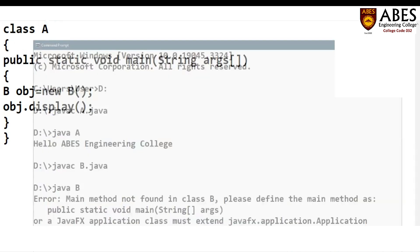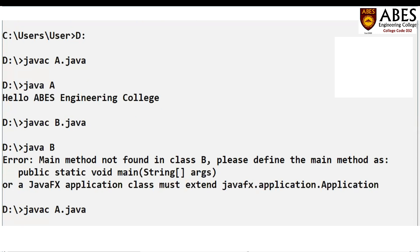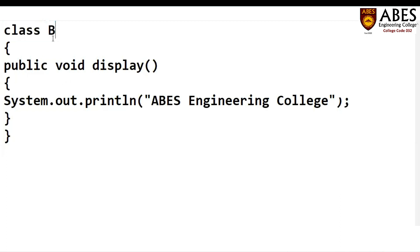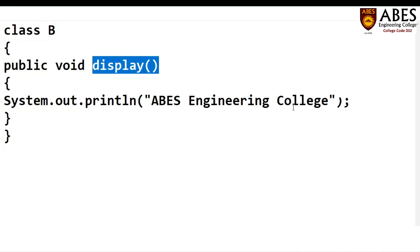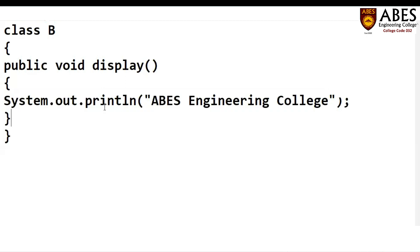Now I'm going to compile this code again. Now I can see the code is compiled, and this time we have a message: 'ABS Engineering College'. So this time we have created the object of class B, and with the help of this object we are calling the method display. Inside this method, display will print the string 'ABS Engineering College'. This is the way by which you can create objects and classes in Java.